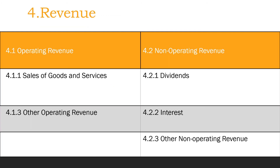4. Revenue. 4.1. Operating revenue: 4.1.1 Sales of goods and services; 4.1.3 Other operating revenue. 4.2. Non-operating revenue: 4.2.1 Dividends; 4.2.2 Interest; 4.2.3 Other non-operating revenue.